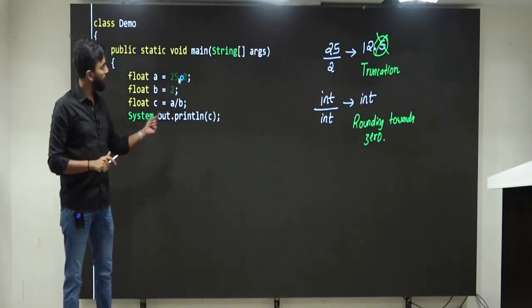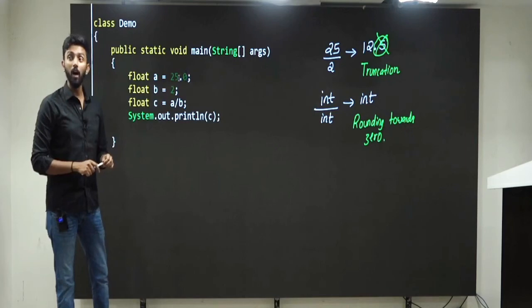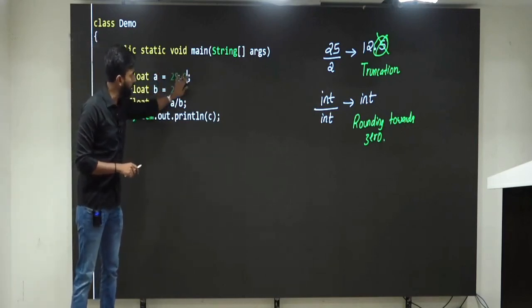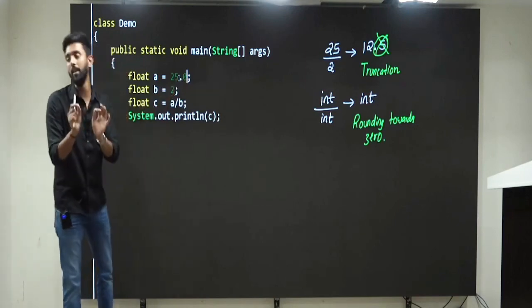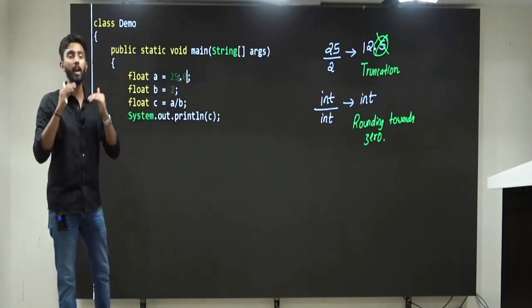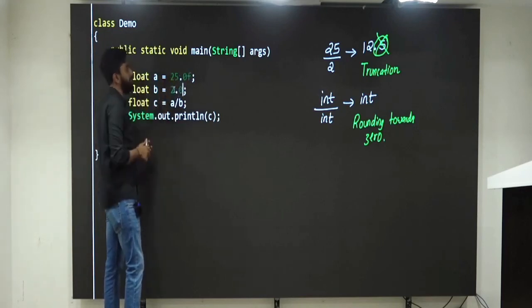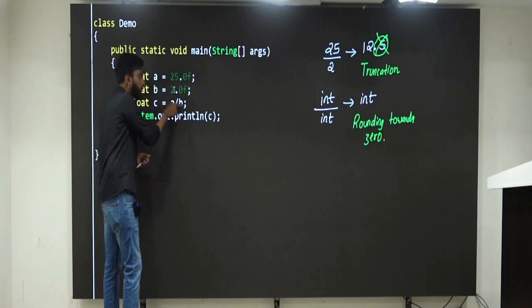Should I stop here, or should I attach something? Very good, because you know automatically in Java, real numbers are treated as double, but we want it to be treated as float, so put F. Similarly, 2.0 F, I will tell. Now, float by float, result is another float.